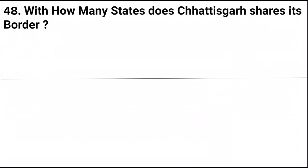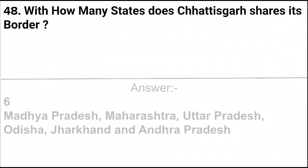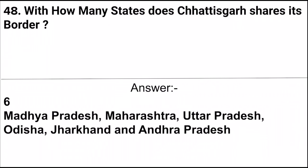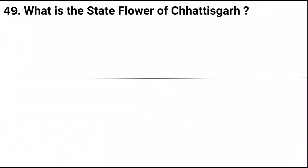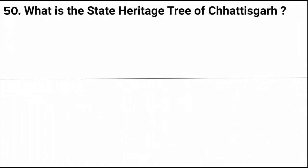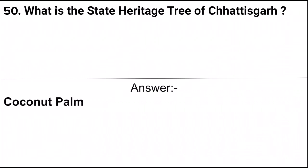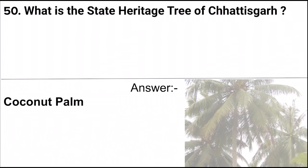Next question: With how many states does Chhattisgarh share its border? Answer: Six. The states are Madhya Pradesh, Maharashtra, Uttar Pradesh, Odisha, Jharkhand, and Andhra Pradesh. Next question: What is the state flower of Chhattisgarh? Answer: Jasmine. And the last question: What is the state heritage tree of Chhattisgarh? Answer: Coconut Palm.